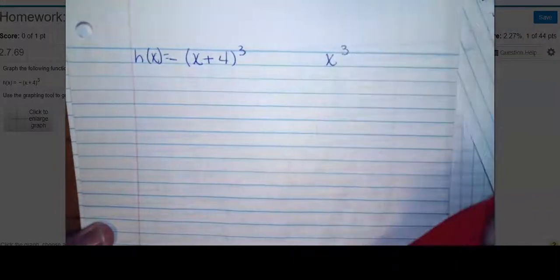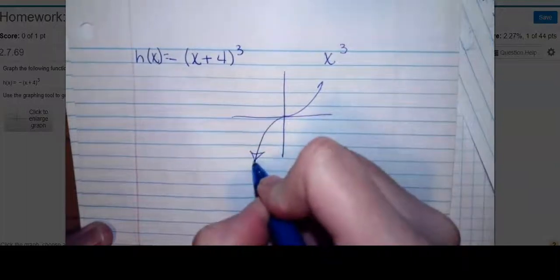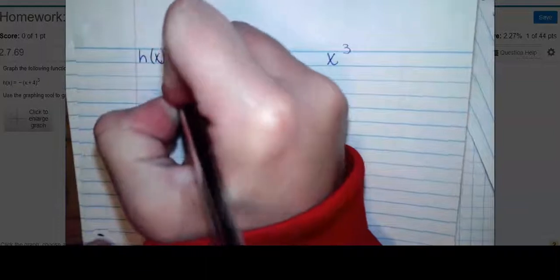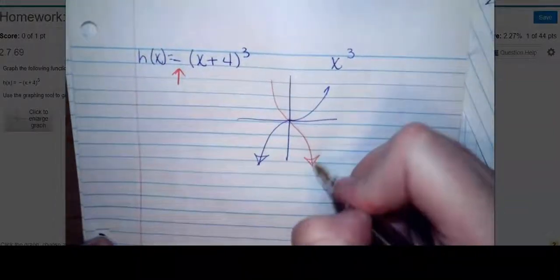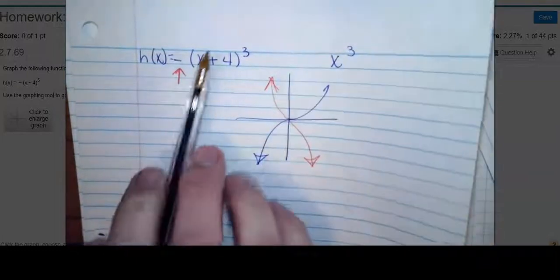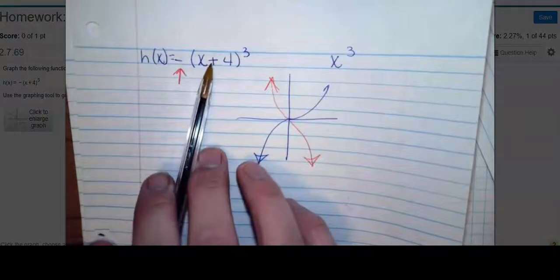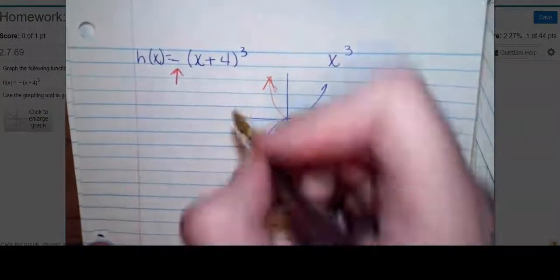Does it have an exponent? Yes. So my parent function is x³, which looks like this, but two things have happened. I've got a negative which means it's been flipped. The other is a horizontal shift to the left 4 units. Remember, always go opposite if it's attached directly to the x. So it ends up looking like this.